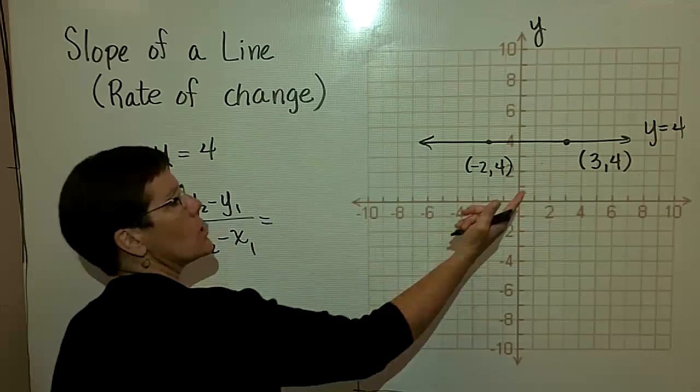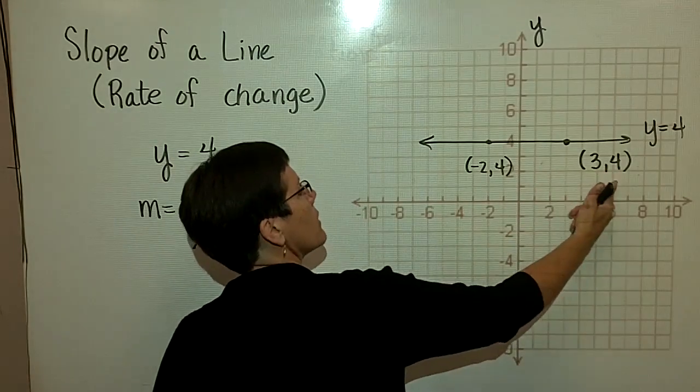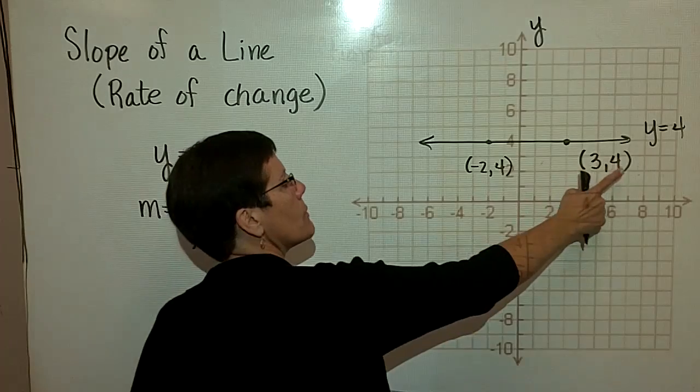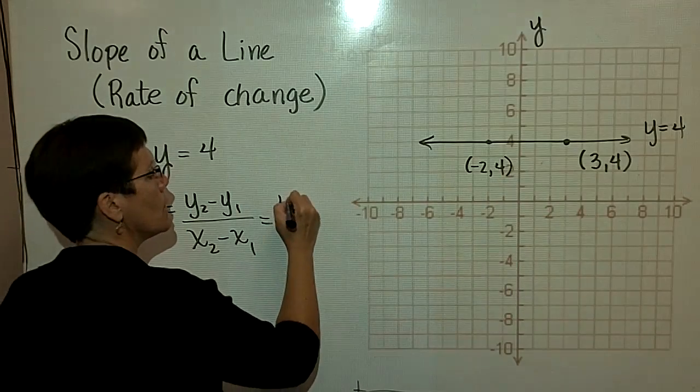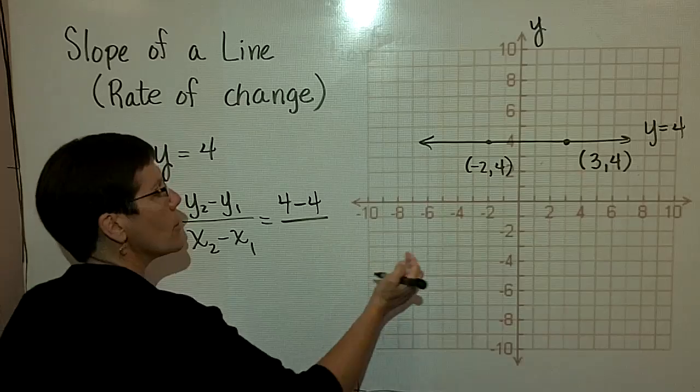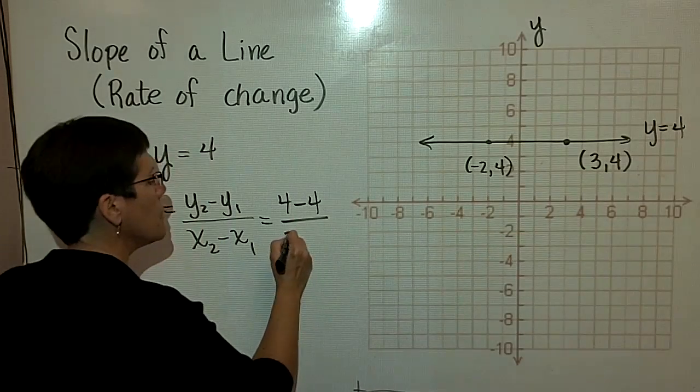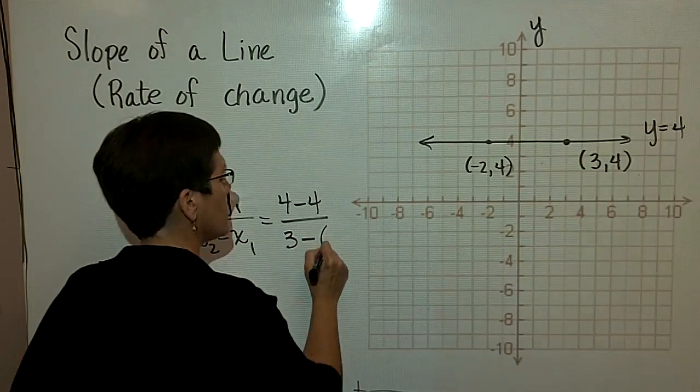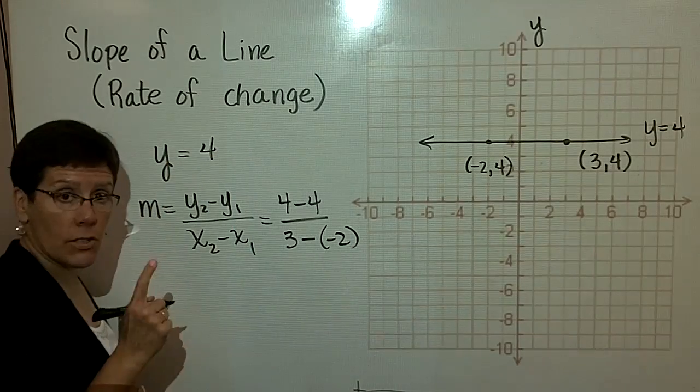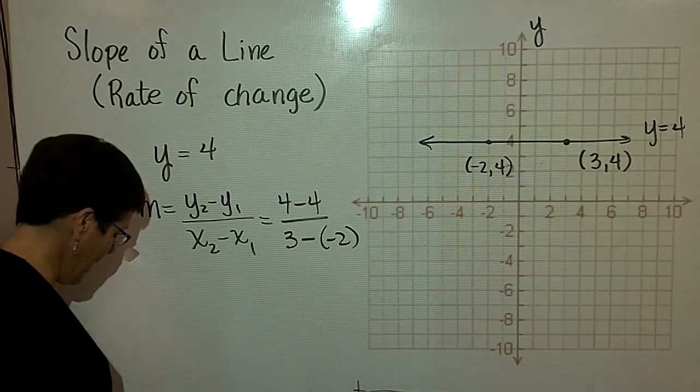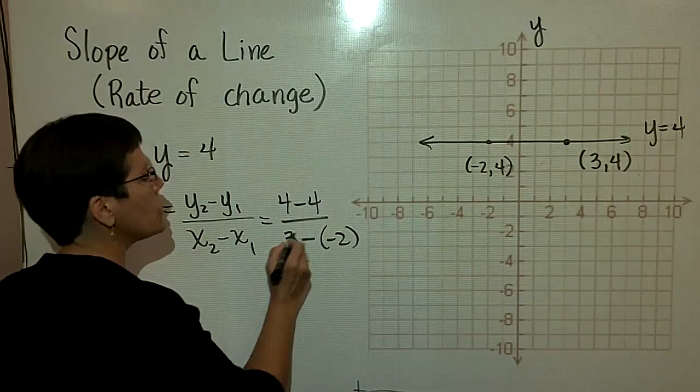I'm going to call this my second ordered pair and this my first ordered pair. So I'm going to take that 4 and subtract that 4 in the numerator. Therefore, I will take that 3 and subtract this negative 2. When you subtract a negative number, you add. Don't forget that you add 2 there.